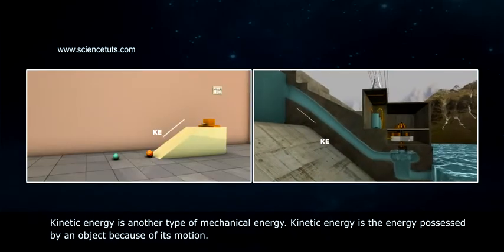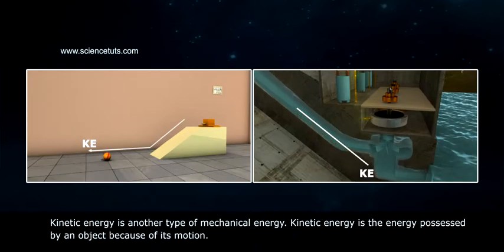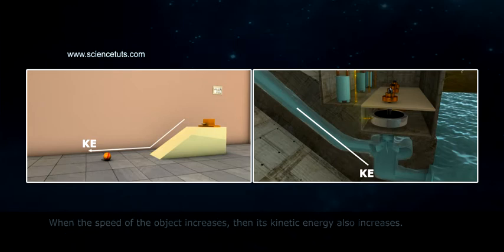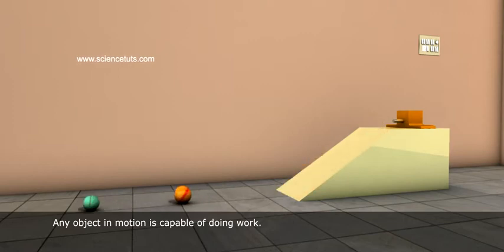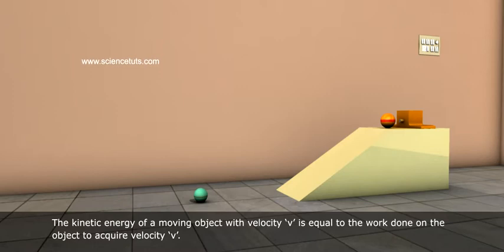Kinetic energy is another type of mechanical energy. Kinetic energy is the energy possessed by an object because of its motion. When the speed of the object increases, then its kinetic energy also increases. Any object in motion is capable of doing work. The kinetic energy of a moving object with velocity V is equal to the work done on the object to acquire velocity V.